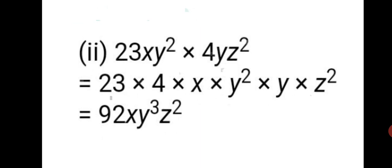Second sum: again multiplying a monomial by another monomial. Multiply the coefficients first: 23 into 4 is 92. Now multiply the variables: x into y squared into y into z squared. x remains as it is. y squared into y gives y cubed — one more power is added. And z squared remains as it is. So the final answer is 92xy cubed z squared.